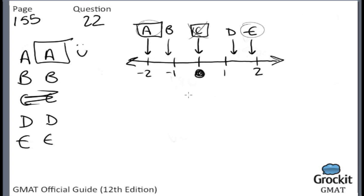If you got this one on the GMAT, you should get it very quickly. Absolute value is absolutely critical to success and getting a good score on the test.